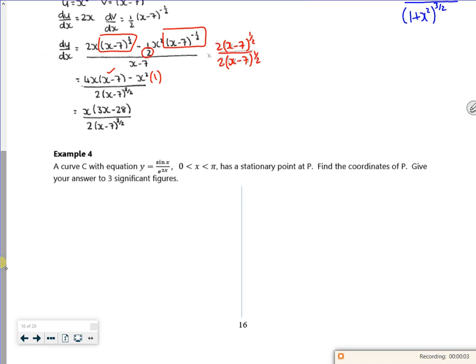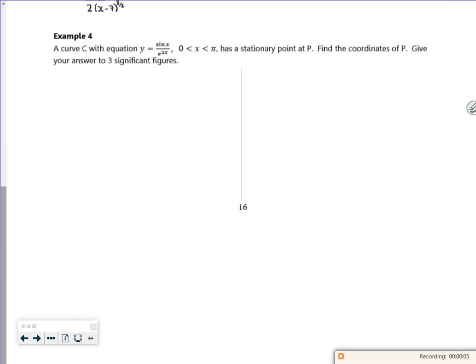Hi everyone, two more examples left so let's have a look at these. A curve C with the equation y equals sine x over e to the 2x has a stationary point, so I'm looking at dy by dx is zero. Find the coordinates of P.